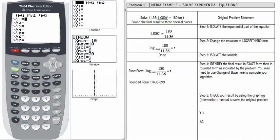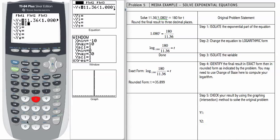So I am going to go to my y equals, and I am going to enter y1 as 11.36 times 1.080 to the t. We are going to kind of run out of room on our line, but all of the parts are there. I am going to enter y2 as 180.